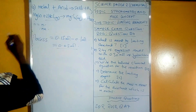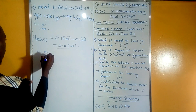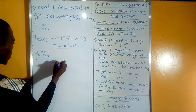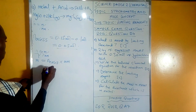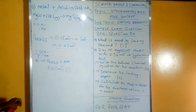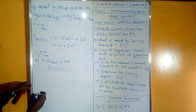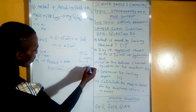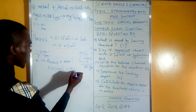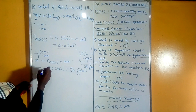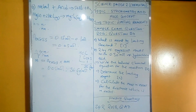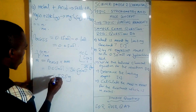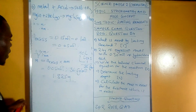Now that we have the excess moles, we use: moles = mass / molar mass, rearranged to mass = moles × molar mass. So excess mass = 0.05 moles × molar mass of HCl. The molar mass of HCl is 35.5 (Cl) + 1 (H) = 36.5 g/mol. Therefore, mass = 0.05 × 36.5 = 1.825 grams. The moles cancel, and we have determined the mass in excess.